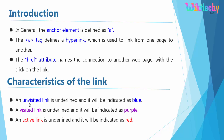An unvisited link is underlined and it will be indicated as blue color. A visited link is underlined and it is in purple color. And an active link is underlined and it will be indicated as red color.